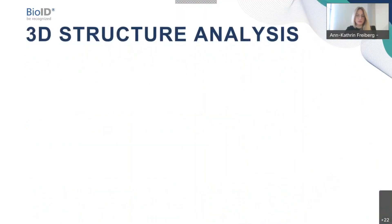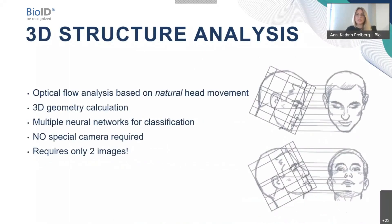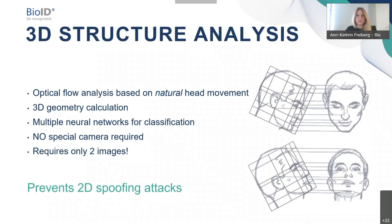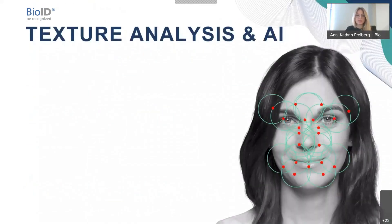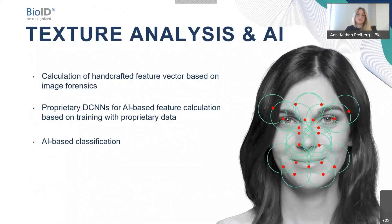How do we do that? We combine two different elements. The first is 3D structure analysis: we perform optical flow analysis on 2D pictures. Since we need to work with standard cameras for remote identity verification — no depth information or 3D cameras — we need to confirm 3D geometry using only 2D RGB standard cameras. We do this by asking the person to slightly move, and from that slight movement we calculate the 3D geometry. This is a very effective way to prevent 2D spoofing attacks.